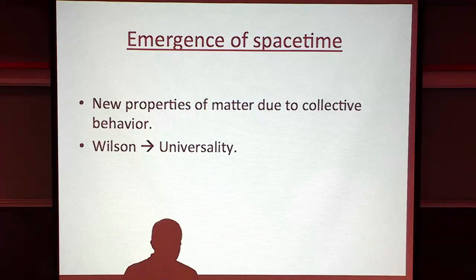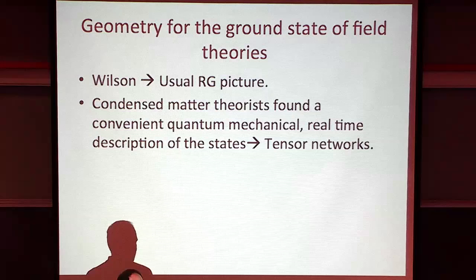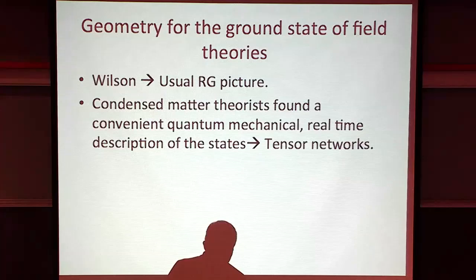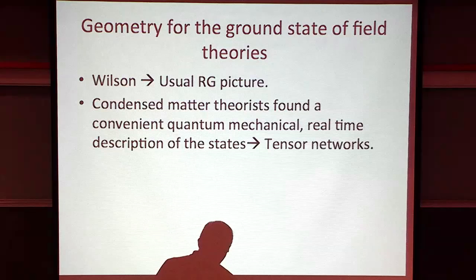We have understood various features of the emergence of spacetime from the gauge theory, and some of these features are similar to what's understood through the renormalization group flow. In particular, if we have the ground state of field theories - AdS, for example - we have the usual Wilsonian renormalization group picture. The different radial directions correspond to different scales in the field theory, and that's fairly well understood.